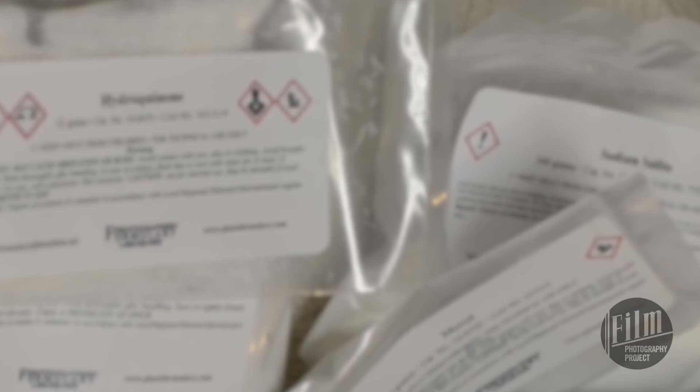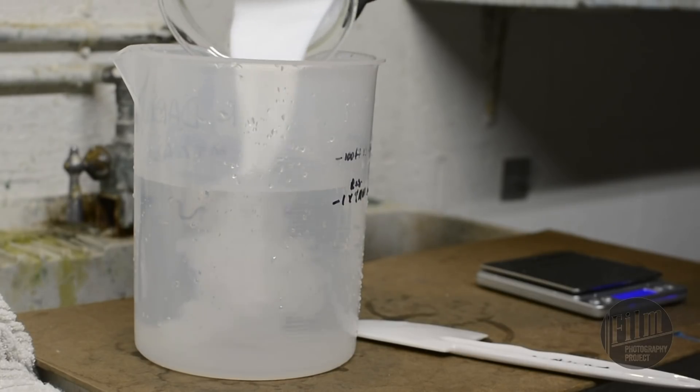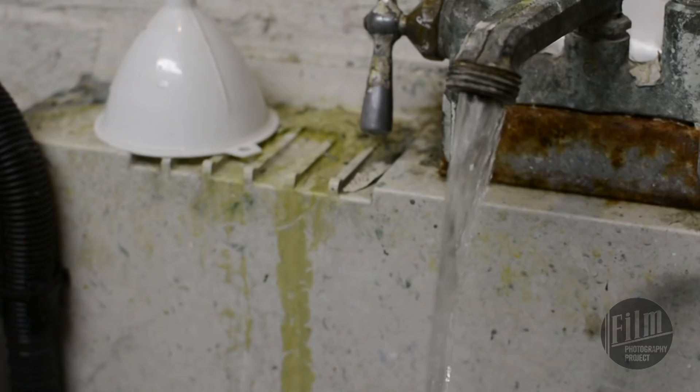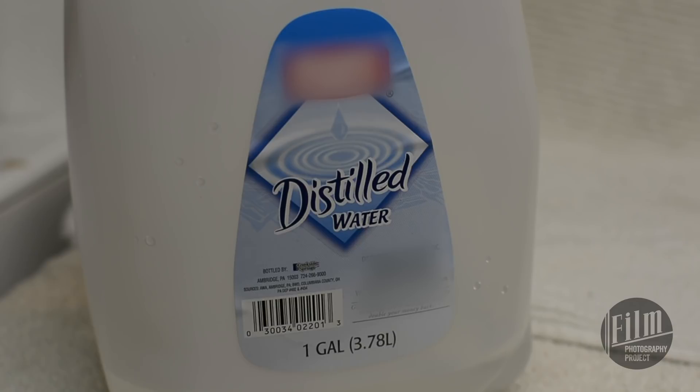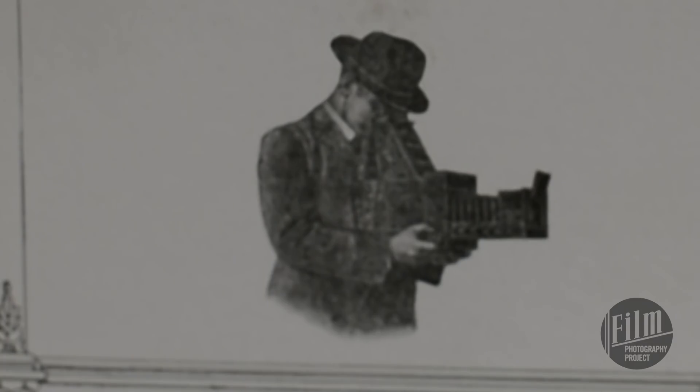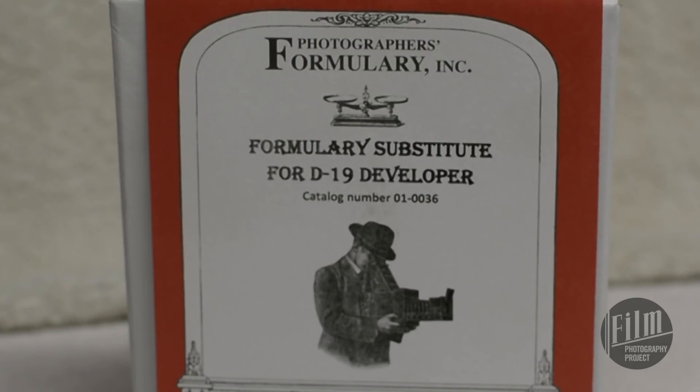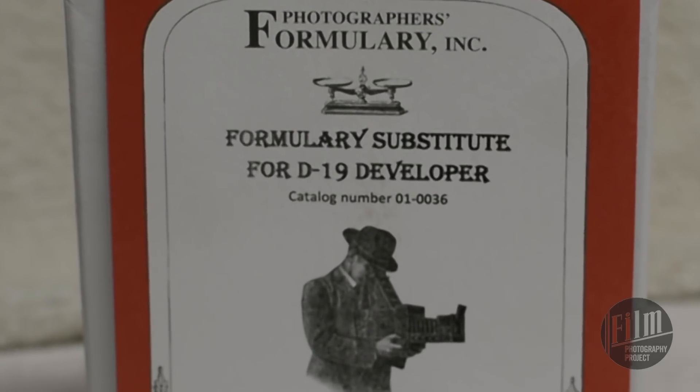Let's discuss the chemicals themselves. Most of the chemicals need to be mixed with water. Don't use tap water because it usually contains minerals and other deposits that can exhaust your chemicals. Distilled water is cheap and it'll make your chemicals last longer. You'll also need a black and white developer. I like to use Photographer's Formulary D19 Substitute.